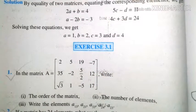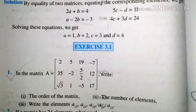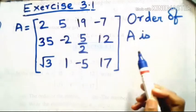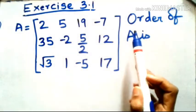Hello everyone. In this video we will be solving the first three questions of Exercise 3.1 of the NCERT Class 12 standard math textbook. In the first question we are given a matrix and we have to find the order of the matrix, the number of elements in it, and the values of a few given matrix elements.